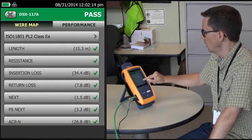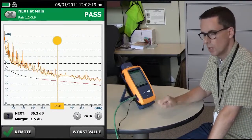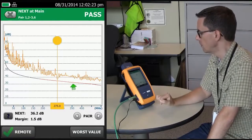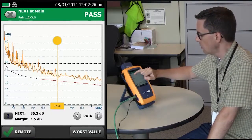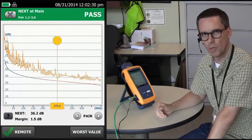When we tap on the screen here for next, we'll go to the worst performing pair. We see that part of the limit line is black and part of it is red. Where the limit line is black, any crosstalk measurement made in that region is ignored under the 4 dB rule.